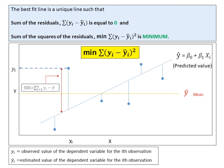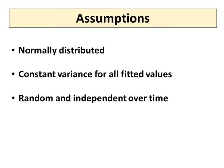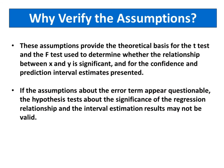To confirm that the regression analysis is valid, verify assumptions about the model error term. Three major assumptions are: normally distributed, constant variance for all fitted values, and random and independent over time. These assumptions provide the theoretical basis for the t-test and the F-test used to determine whether the relationship between X and Y is significant, and for the confidence and prediction interval estimates presented.